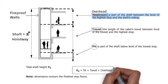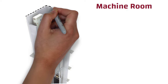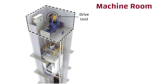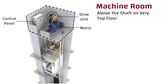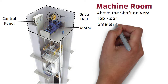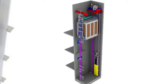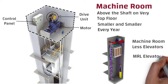Machine Room is a special room accessible only to authorized persons, which contains the lift drive unit, control panel, and motor. It is often placed above the shaft on the very top floor. With advancements in technology, the machine room is getting smaller every year, and some systems even have them installed inside the shaft. These are also known as machine room-less elevators or MRL elevators.